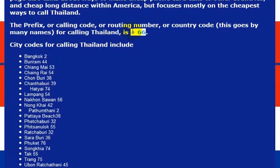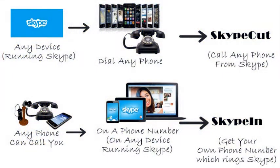So you would call Thailand directly and just dial 011 and then the country code for Thailand, which is 66. But I wouldn't really recommend calling direct — your phone company will charge you a lot of money. If you want to call a phone number, I really recommend using Skype.